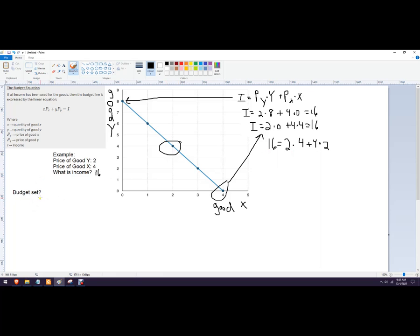And then again, all of these points together make up the budget set given that level of income. You could also be given just some information. Like if it said the income level is 32 and it said the price of good Y is 8 and the price of good X is 2, you could say write the budget line or the budget equation.